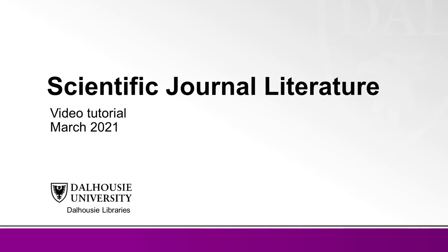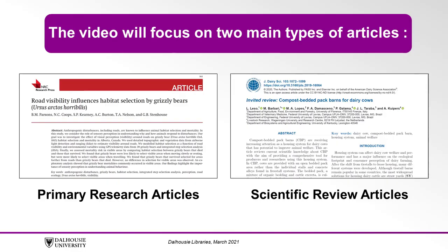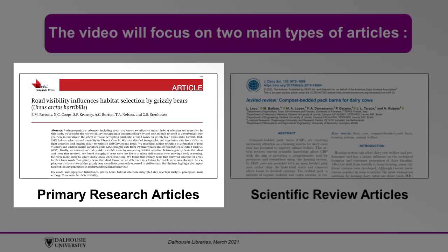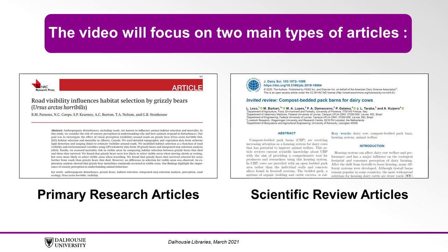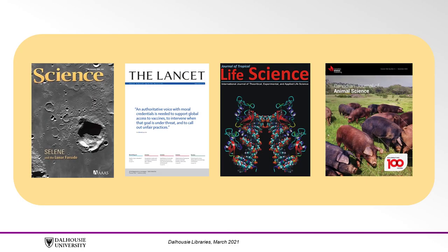In this video you will learn about the different types of scientific journal literature. This video will focus on two main types of articles that will be important to you as you complete your assignments: the primary research article and the scientific review article. You will learn the characteristics of each type. Scientists communicate their scholarly research results by publishing articles in scientific journals. Let's have a look at the kinds of articles that can be found in these journals.